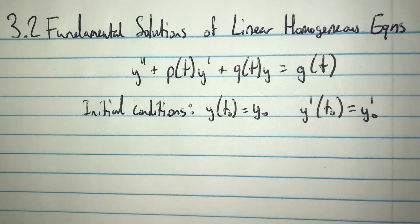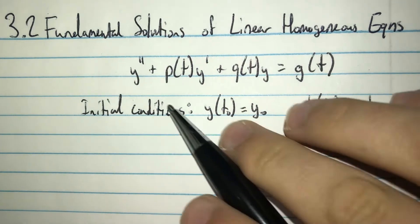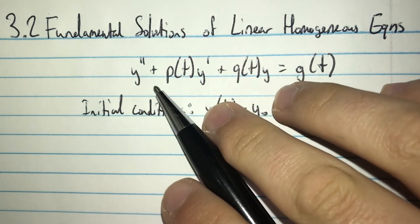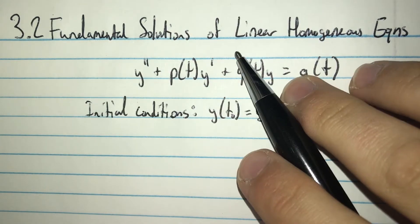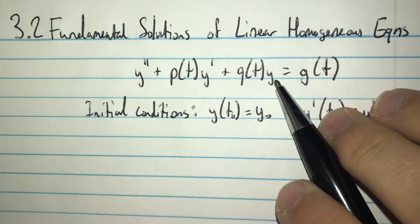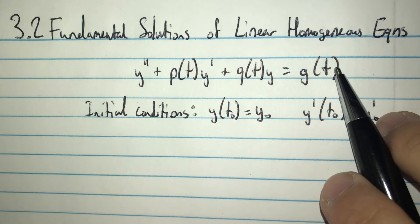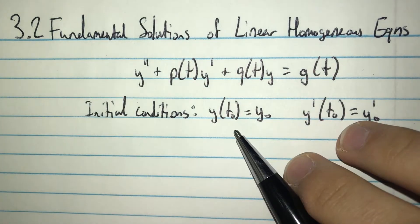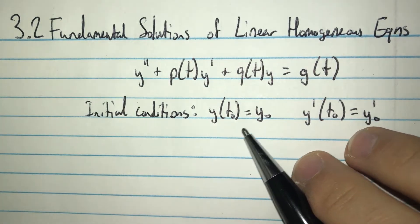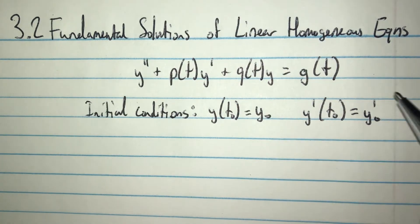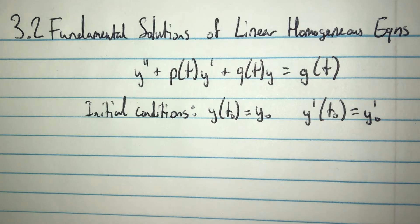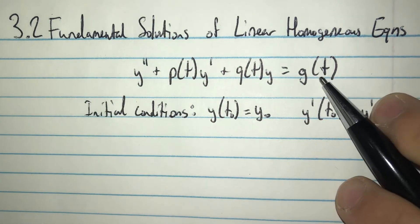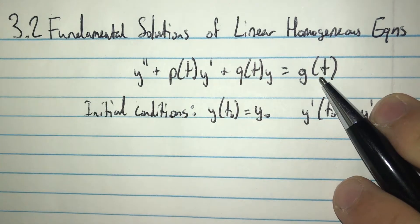The general format of the second-order differential equation is y double prime plus p of t times y prime plus q of t times y, which is equal to g of t. We must also be given initial conditions: y of t-zero equals y-naught, and the same for the derivative. With the homogeneous equation, g of t is zero.